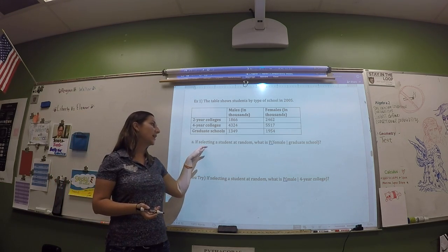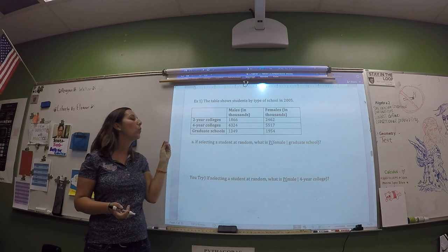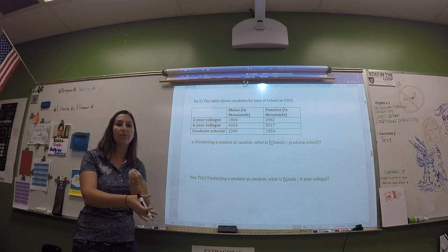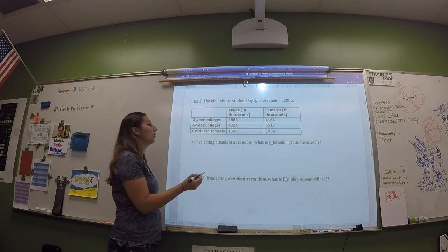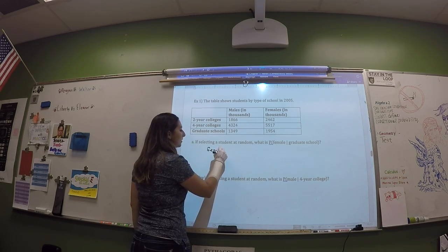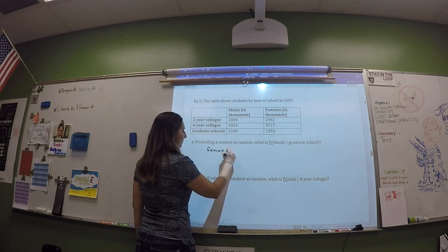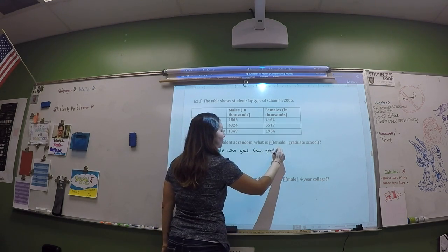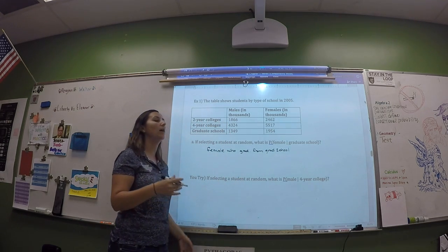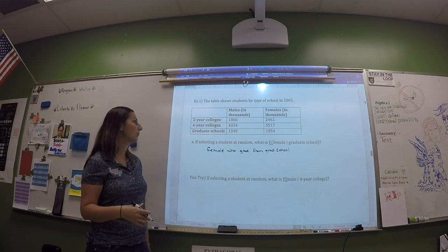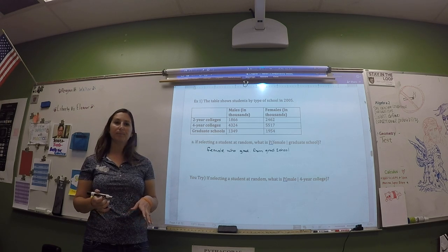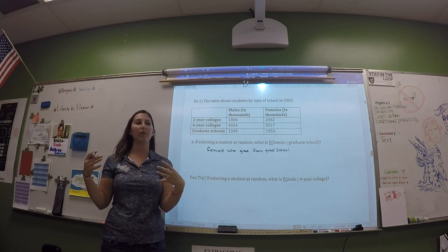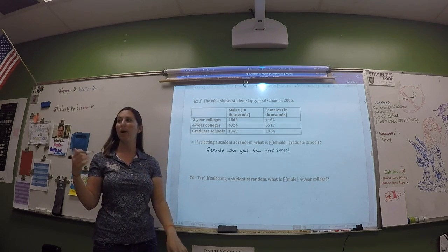We're being asked: if selecting a student at random, what is the probability that you're selecting a female given that that student graduated from graduate school? First we're going to look at females who graduated from grad school — the combination of females and grad school. We already have that number in the contingency table. Where is the overlap of females and grad school?